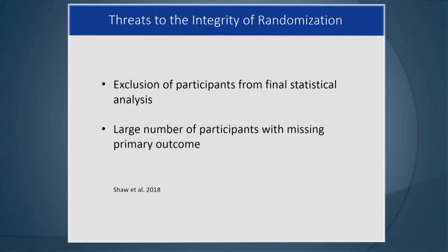Threats to the integrity of randomization. We talked about randomization methods, but what are threats to the integrity of randomization? What can weaken the benefits of randomization? Well, exclusion of participants from final statistical analysis. Everybody got randomized, but then when it comes to the analysis, some are excluded. You really want to absolutely minimize that, because the more you do that, the more it ruins the benefit of the randomization.